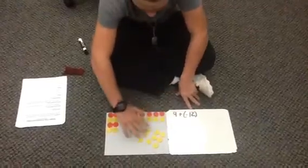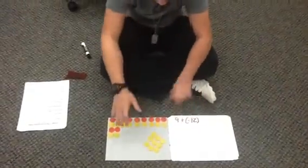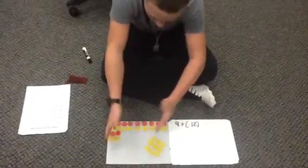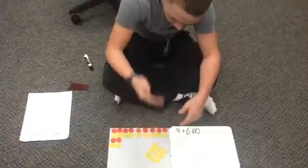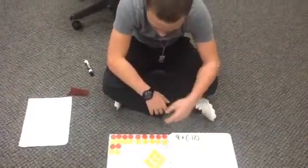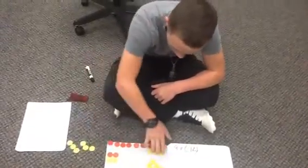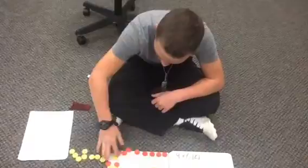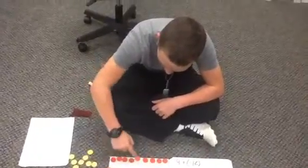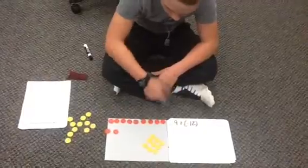Well, here's our 9, and since we didn't directly have 12 before, we had to make groups of 0. So now we take away all the positives, and now we're left with negative 12. Okay.